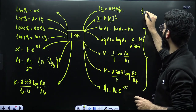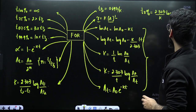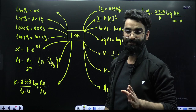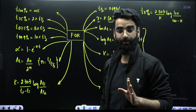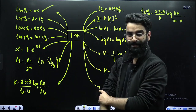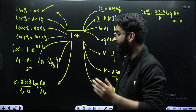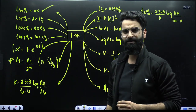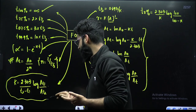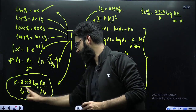Time taken to complete X percent of a first-order reaction is: 2.303 divided by K, times log of 100 divided by (100 minus X). A first-order reaction never reaches 100% completion — it takes infinite time. Time for 75% completion is 2 half-lives, for 87.5% it is 3 half-lives, and for 99.9% it is 10 half-lives. Degree of dissociation for first-order reaction A gives B is: 1 minus e raised to minus KT. Concentration of reactant left after N half-lives is A_0 divided by 2 raised to N, where N equals total time divided by T half.